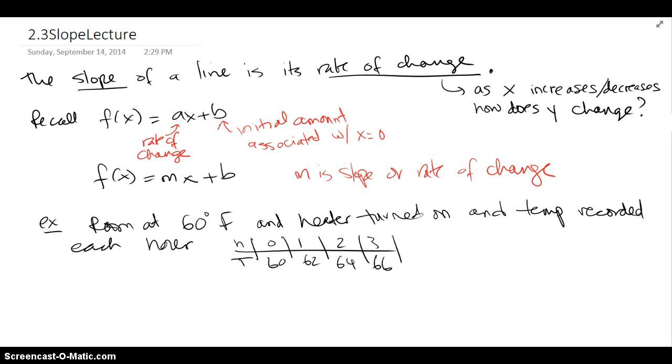Remember we talked about a room temperature being at 60 degrees Fahrenheit, and the heater gets turned on, and the temperature keeps getting recorded every hour. We found that the temperature as a function of h the time was really 2h plus 60, since 60 was the initial temperature and there was always a rate of change of 2 units.